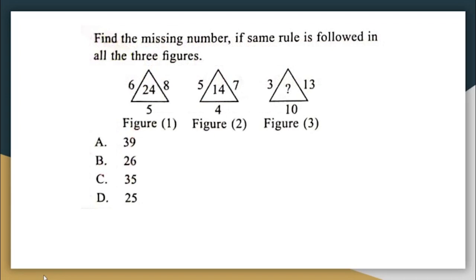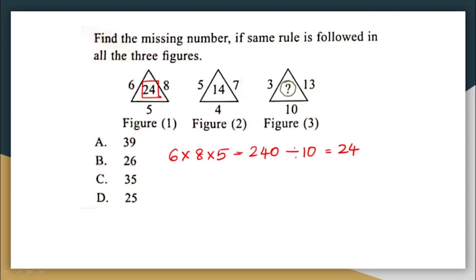Next question: find the missing number if the same rule is followed in all three figures. There is a triangle in each figure with one number in the center and three numbers outside. For the first figure: 6 × 8 × 5 = 240, and 240 ÷ 10 = 24, which is the number in the center. For the second figure: 5 × 4 × 7 = 140, and 140 ÷ 10 = 14, which is the center number.